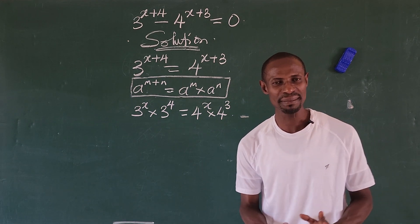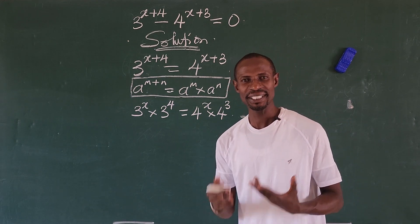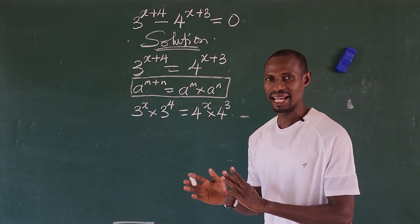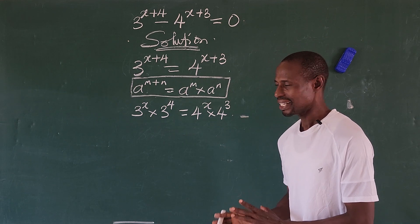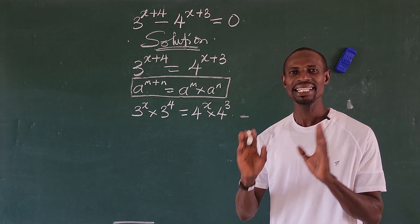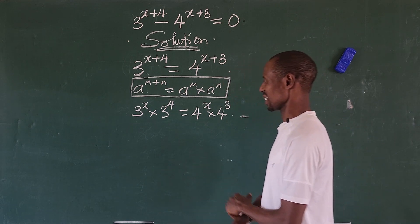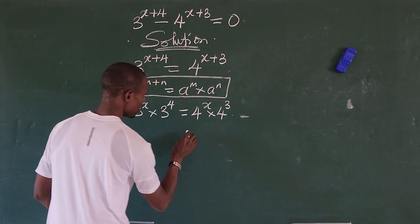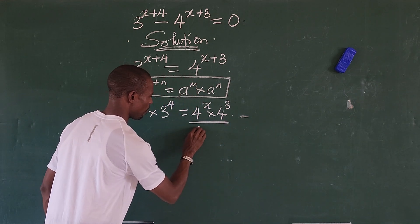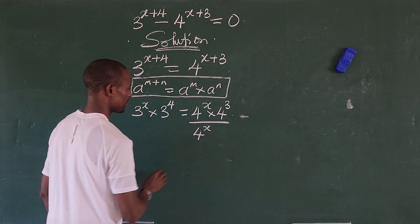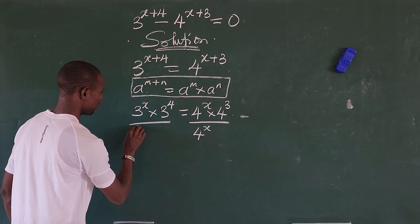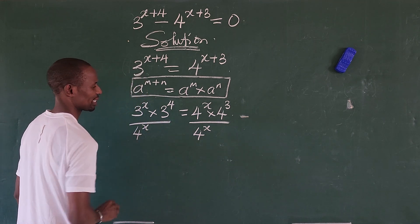From here, we want to carry the terms having x to one side and the constants to the other side. So we divide both sides by 4 to the power of x.